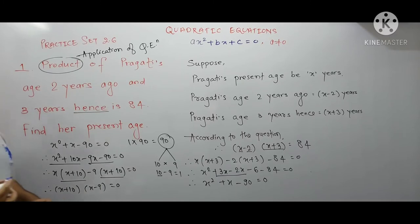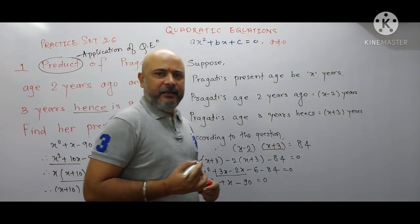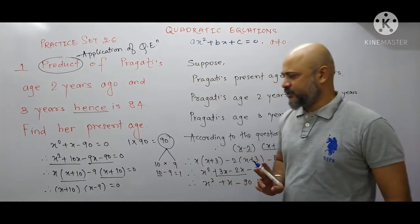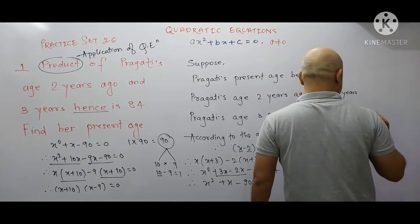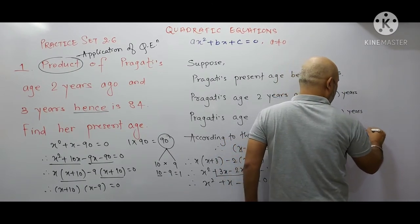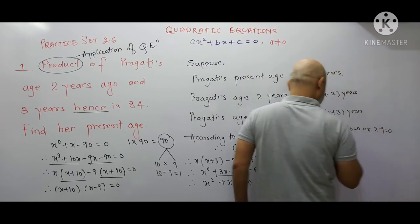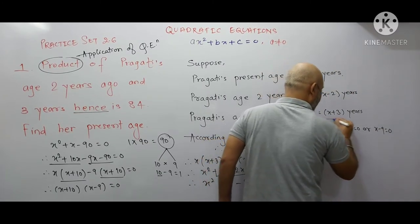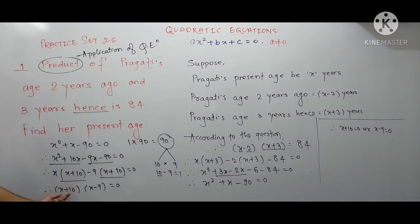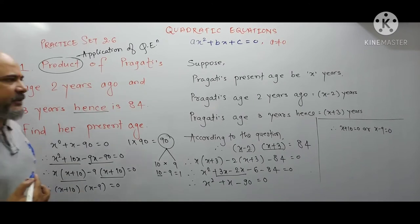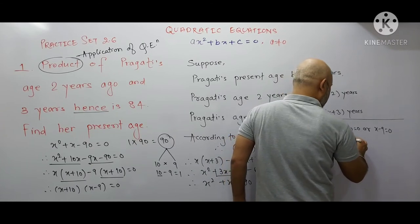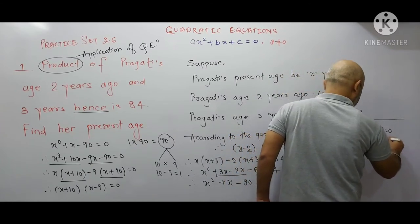The product of the two brackets equals zero, that is (x + 10)(x − 9) = 0. So either x + 10 = 0, giving x = −10, or x − 9 = 0, giving x = 9.